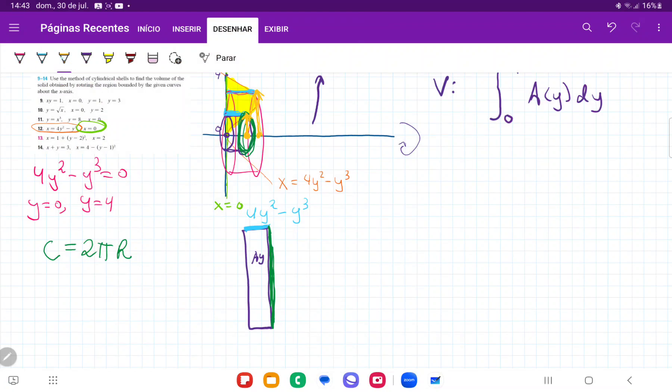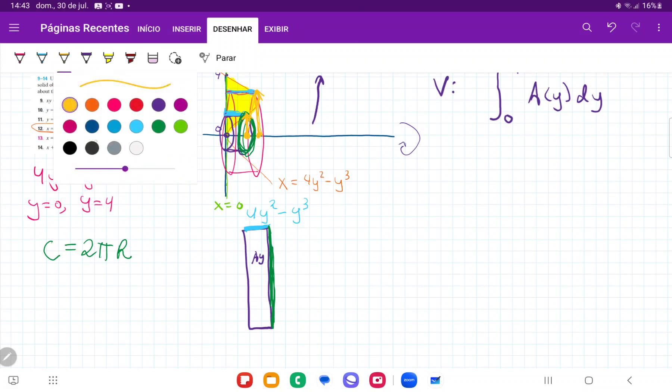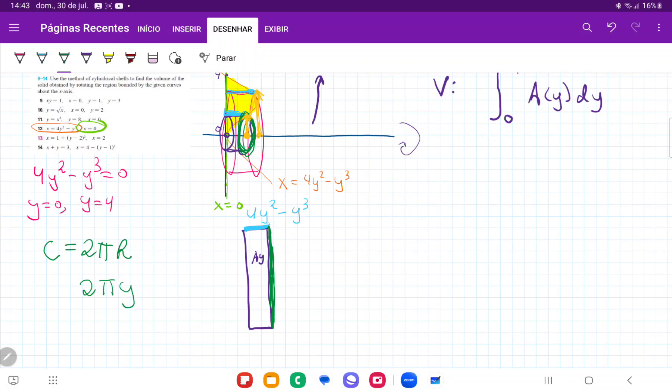So the radius is just a value of y. Therefore we have here that the circumference is just 2 pi y. Therefore, my length here is going to be 2 pi y.